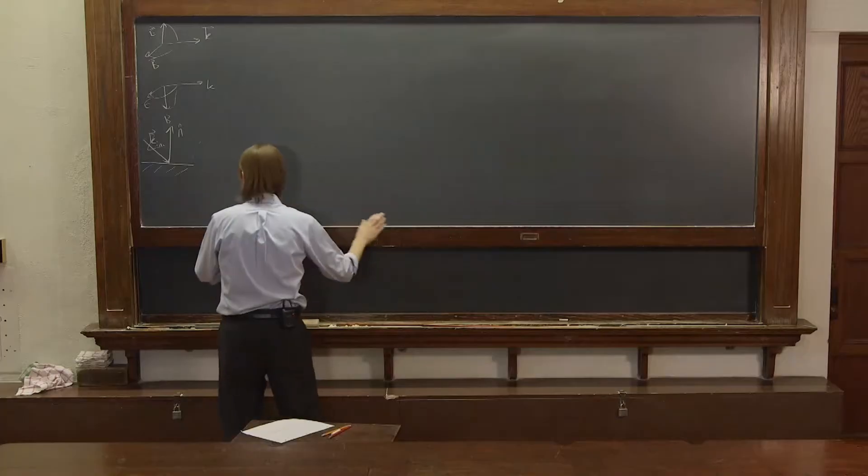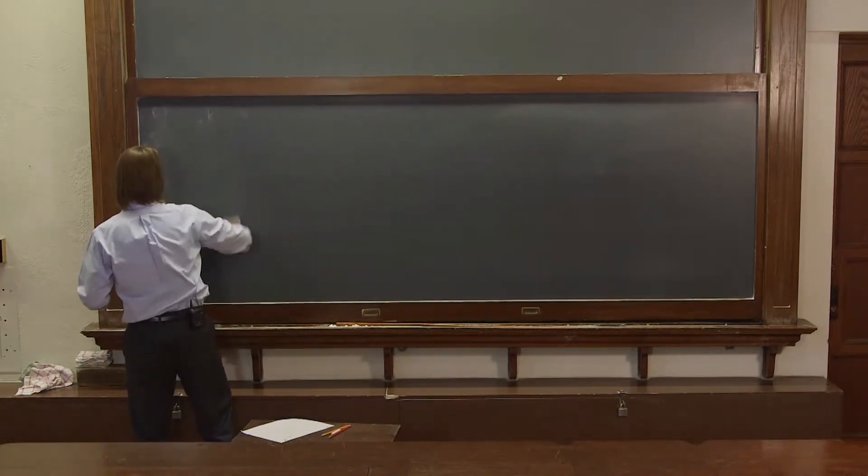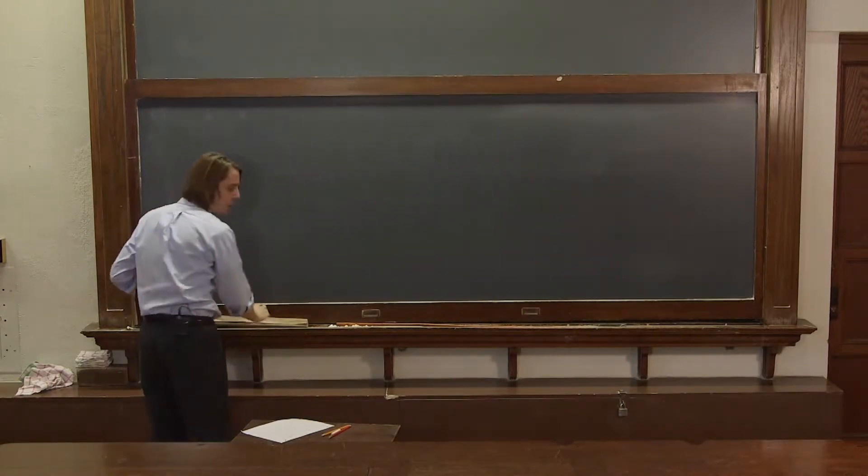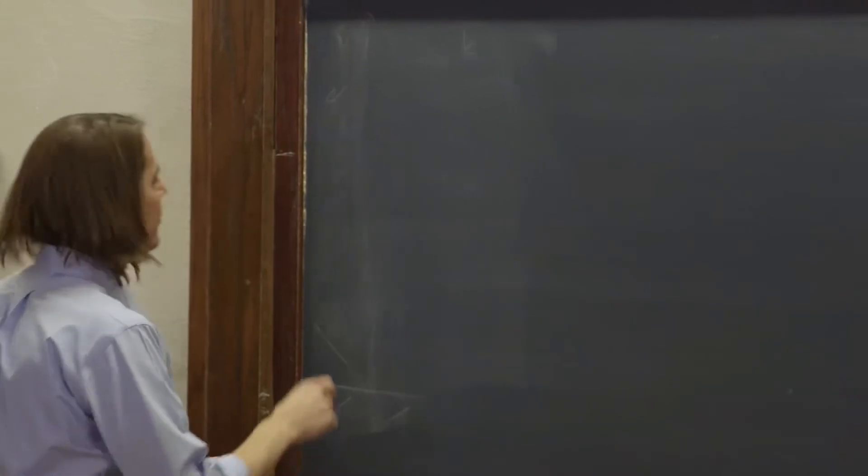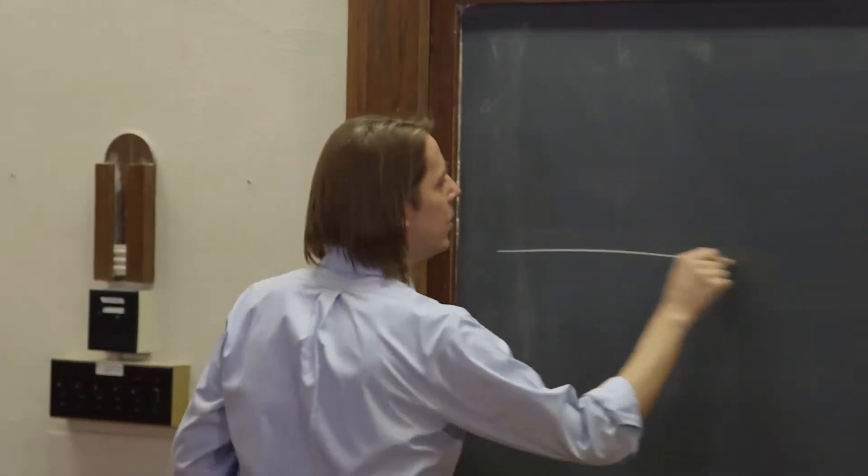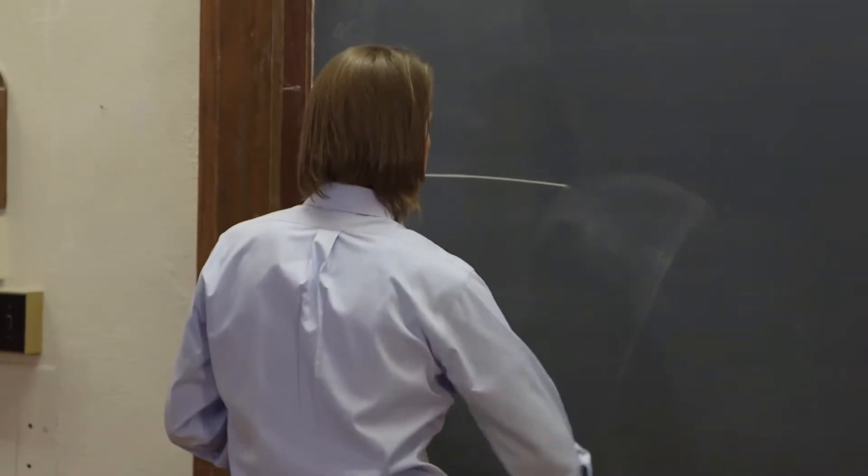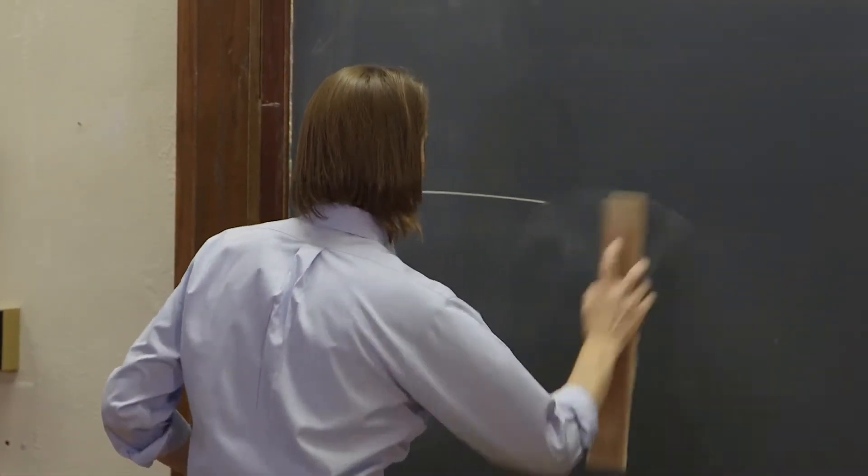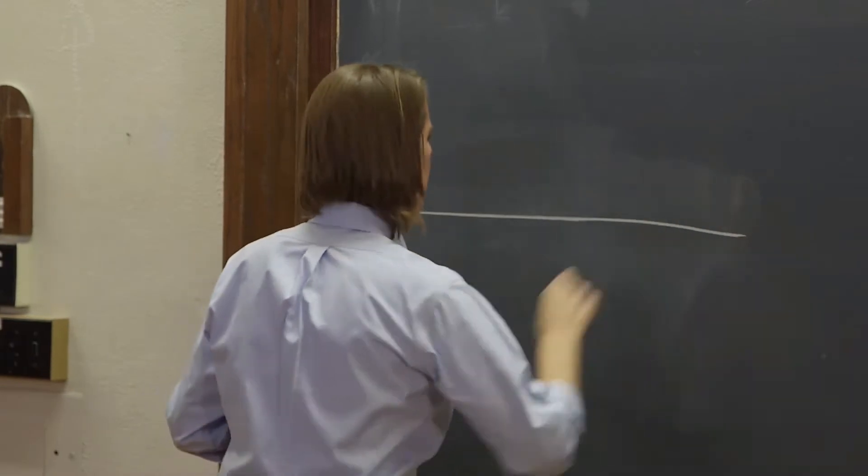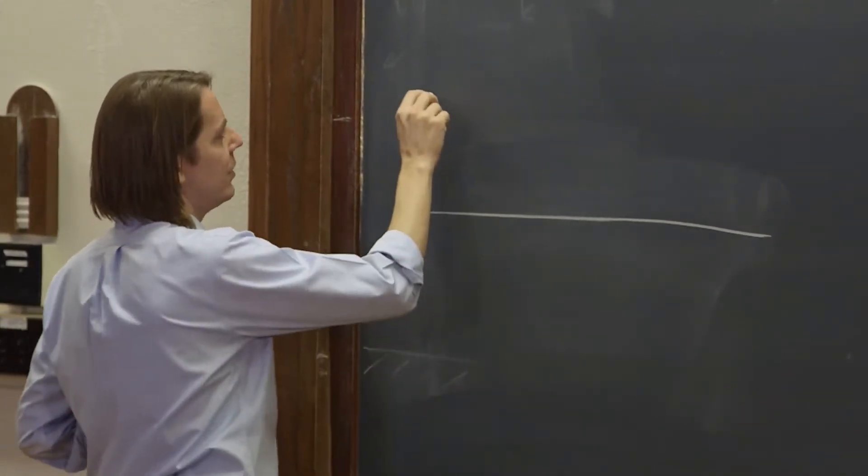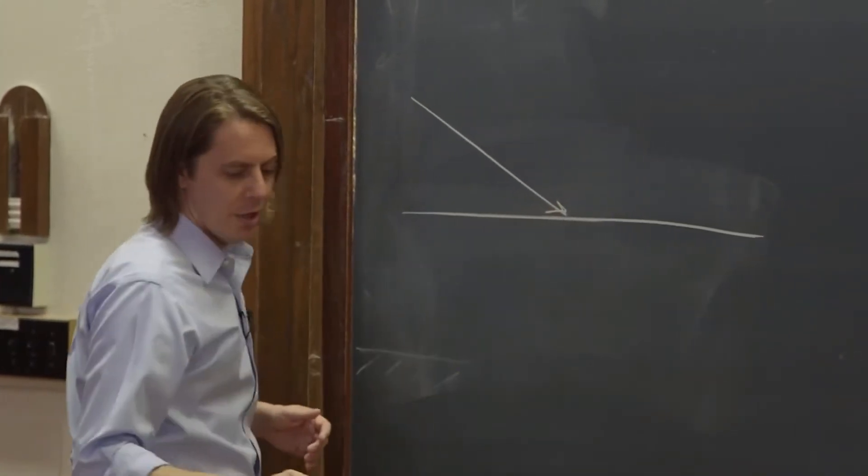So let's look at how we can now treat this more mathematically. And let's draw the two cases, TE and TM, in a way where we can label everything. So here is one interface. And what I'm going to be drawing is interface. There we go.